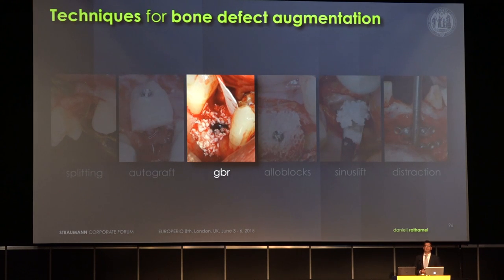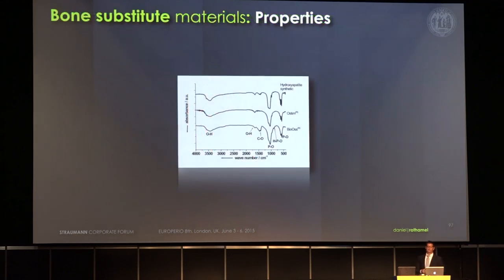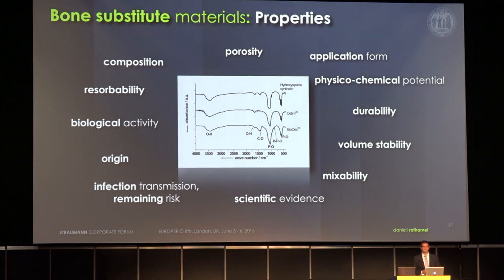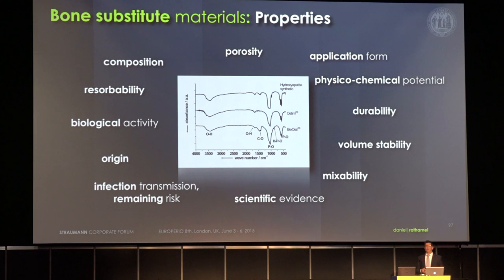When we talk about GBR techniques, we have to talk about bone substitute materials. There are a lot of bone substitute materials available on the market. They can all be differentiated in terms of porosity, application form, origin, and scientific evidence. For the biphasic calcium phosphates alone, for example, there are more than 73 calcium phosphates available in the market.